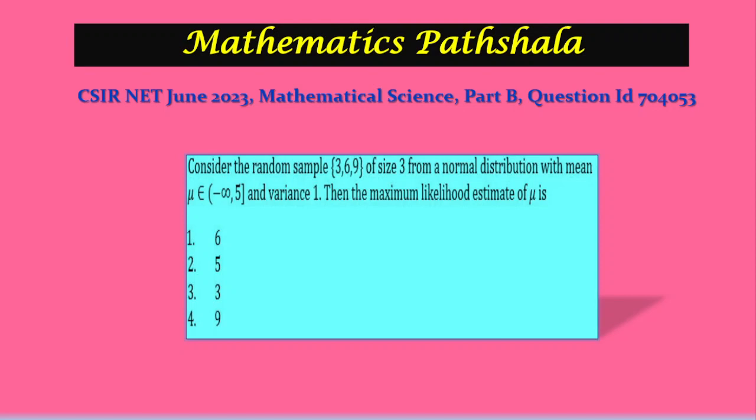And it's a problem of statistics part. The problem is to consider the random sample of size 3 from a normal distribution with mean μ which belongs to (-∞, 5] closed interval and variance 1.